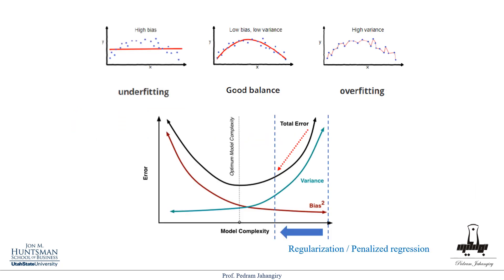Now let's talk about the motivation for regularization. Here the blue dots are real observations and the red line is our fit. In this example the bias is very high because on average it's not capturing the true pattern in the data. But the variance is going to be small, because if I try another sample it's going to capture something similar each time — all of those samples are going to be off from the true pattern. So in this example bias is high and variance is very small.